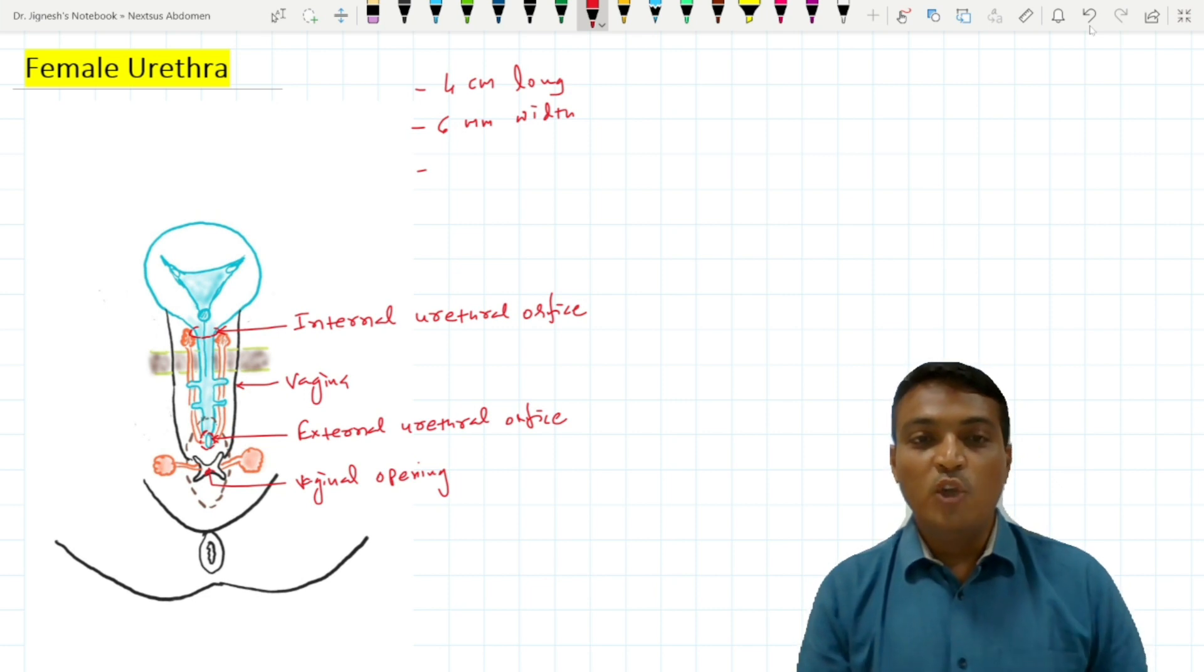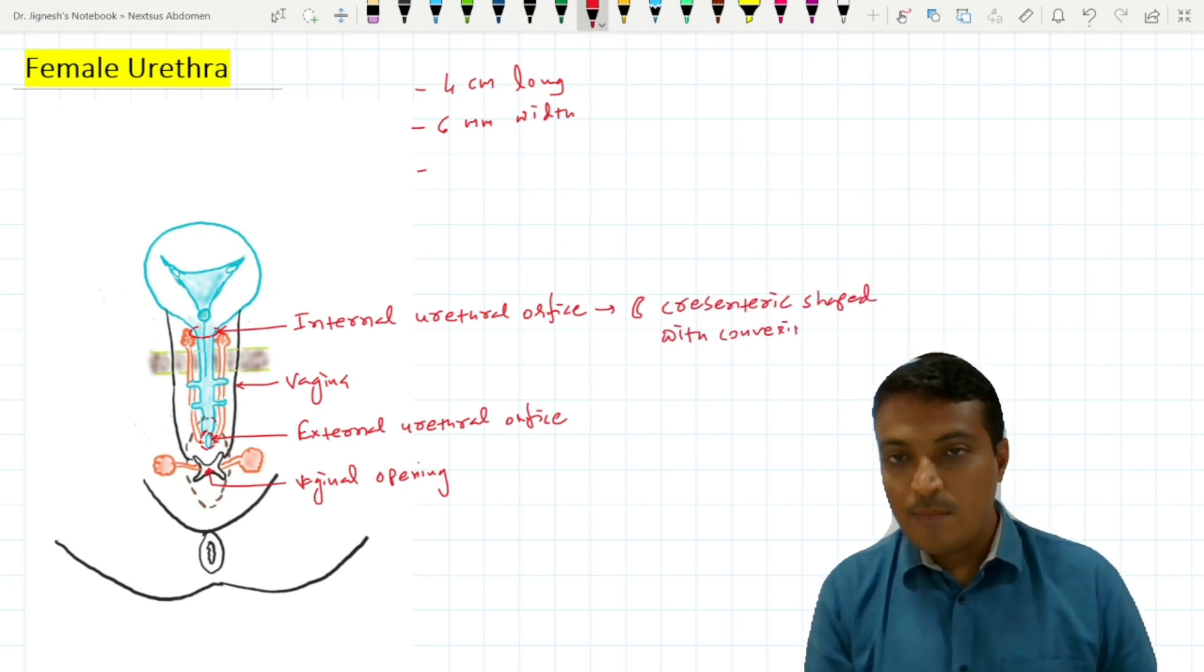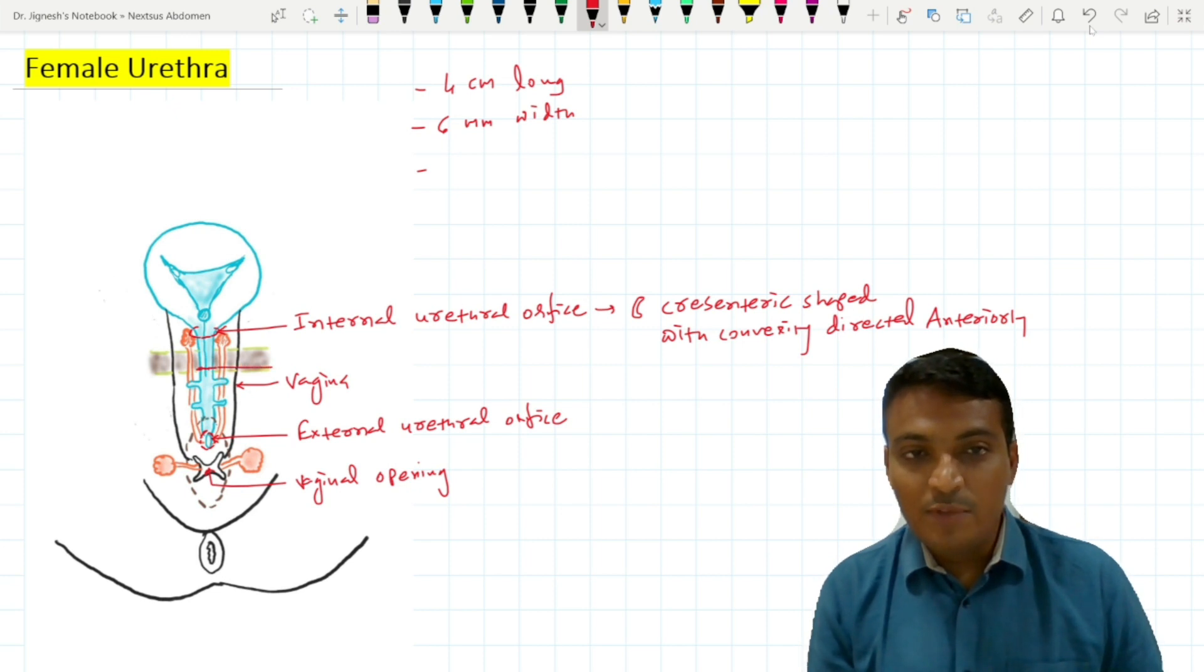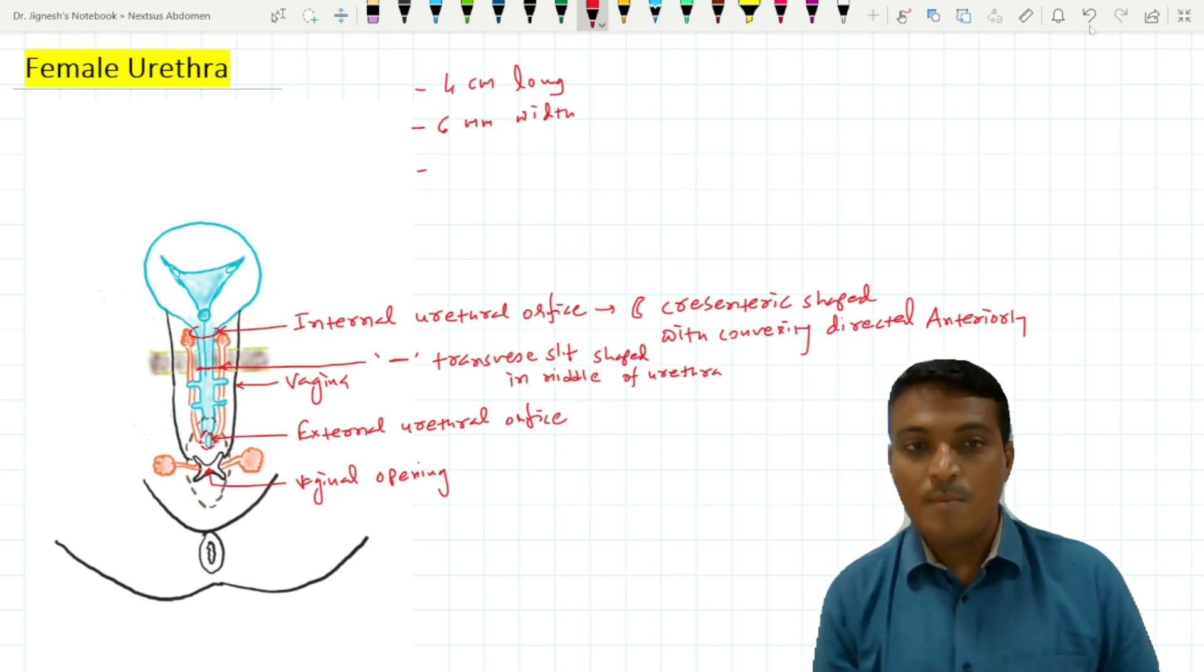The shape of the lumen of the female urethra varies along its course. At the internal urethral orifice, it is crescent-shaped with the convexity directed anteriorly. In the middle, the lumen is in the form of a transverse slit, and at the external urethral orifice, the urethral lumen is in the form of a vertical slit.